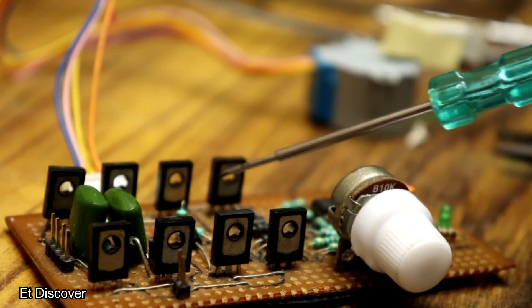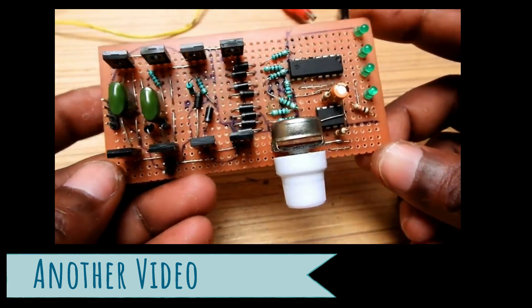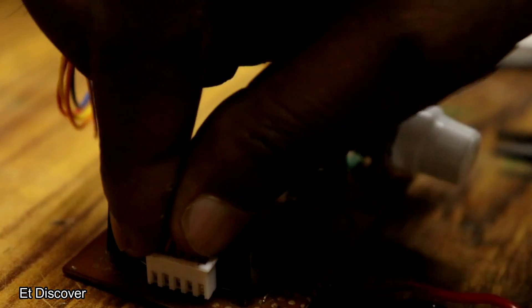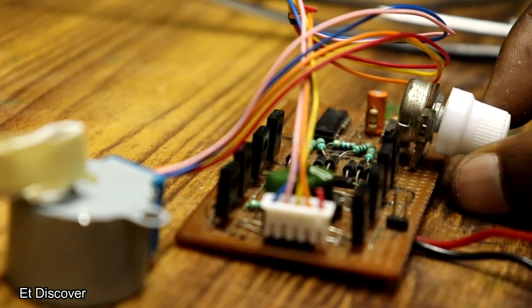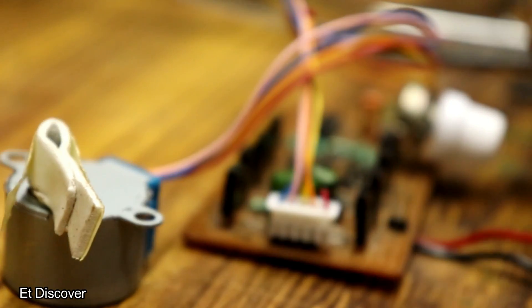This is my homemade bipolar motor tester. If you want to know more about this bipolar motor tester, then check out the link in the description. Now I put my bipolar motor plug on the tester and slowly rotate the volume. And as you can see the motor shaft is rotating.